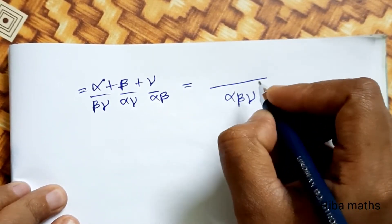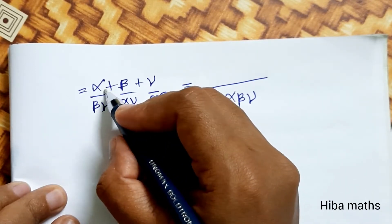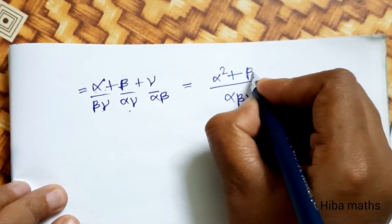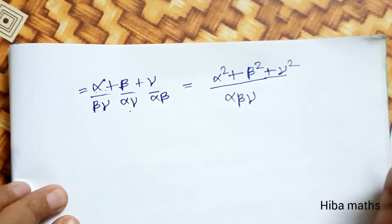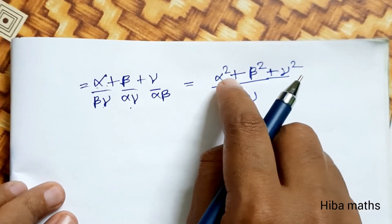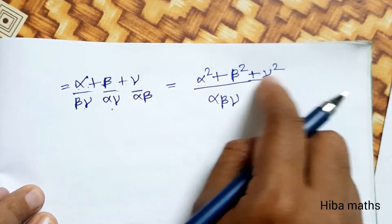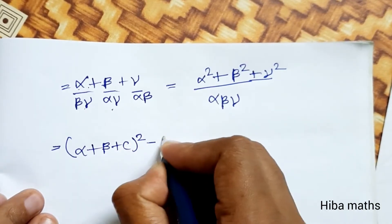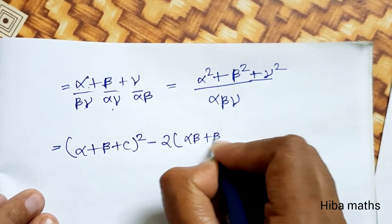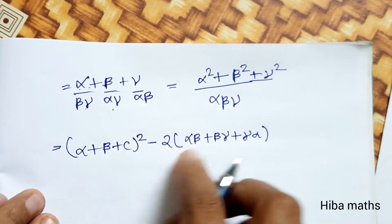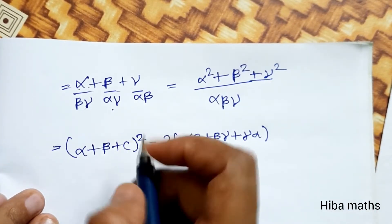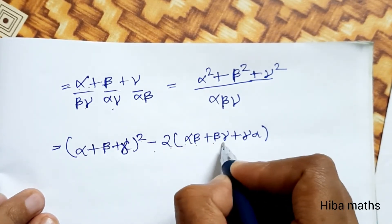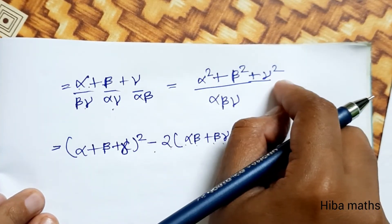For alpha, beta, gamma — we need alpha² + beta² + gamma². Using the algebraic identity, a² + b² + c² equals (a + b + c)² minus 2(ab + bc + ca). So alpha² + beta² + gamma² equals (alpha + beta + gamma)² minus 2 times (alpha·beta + beta·gamma + gamma·alpha).